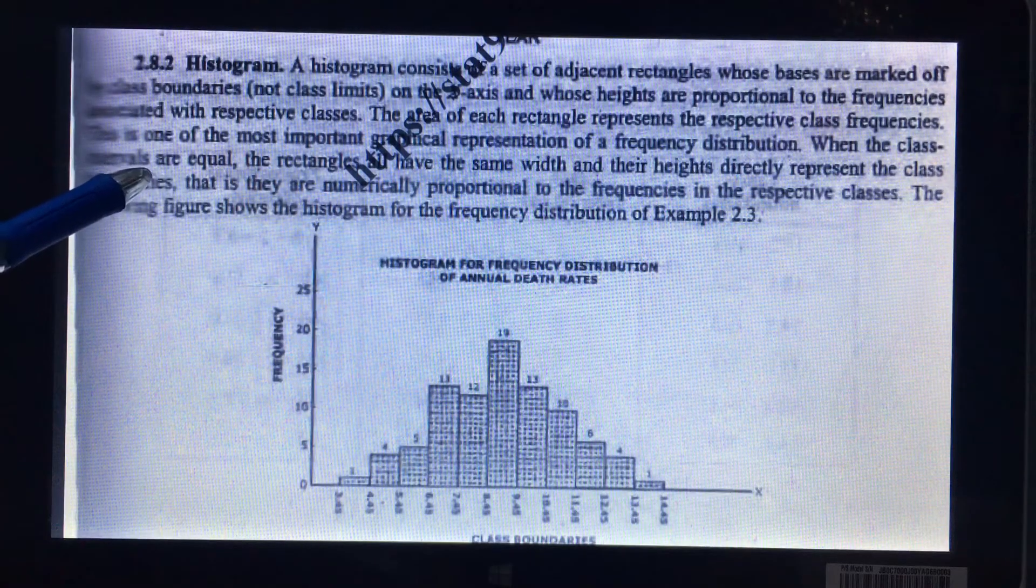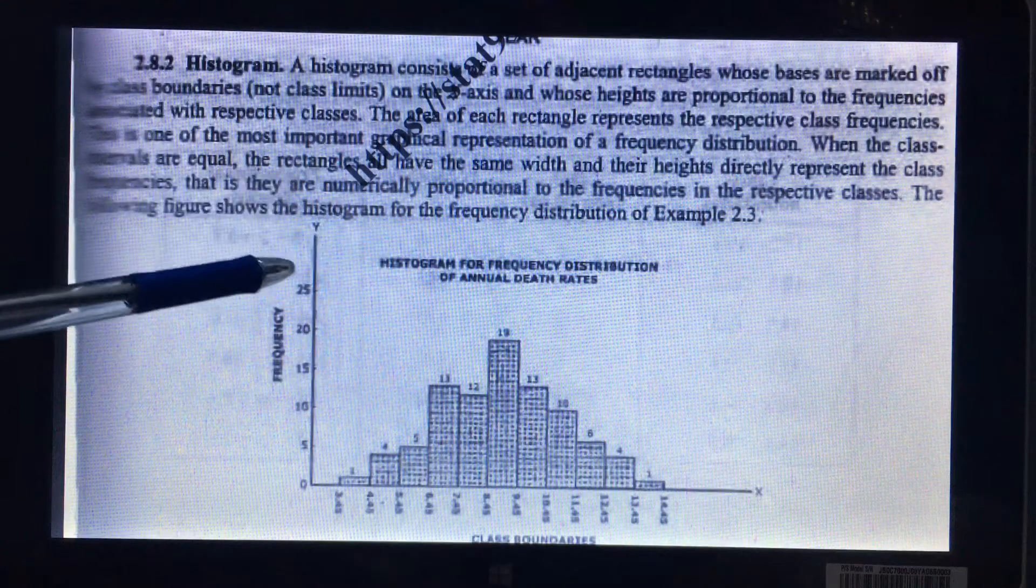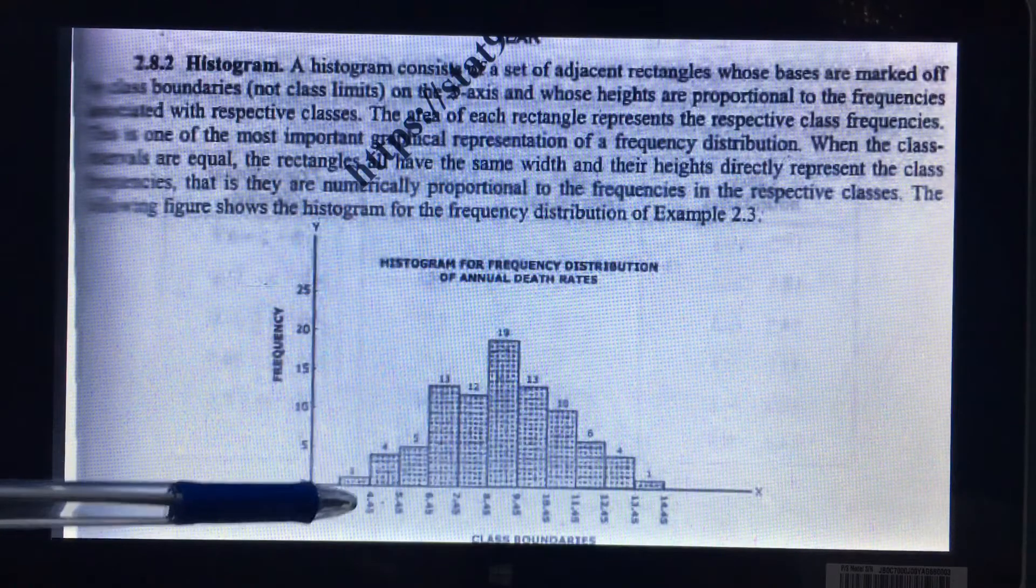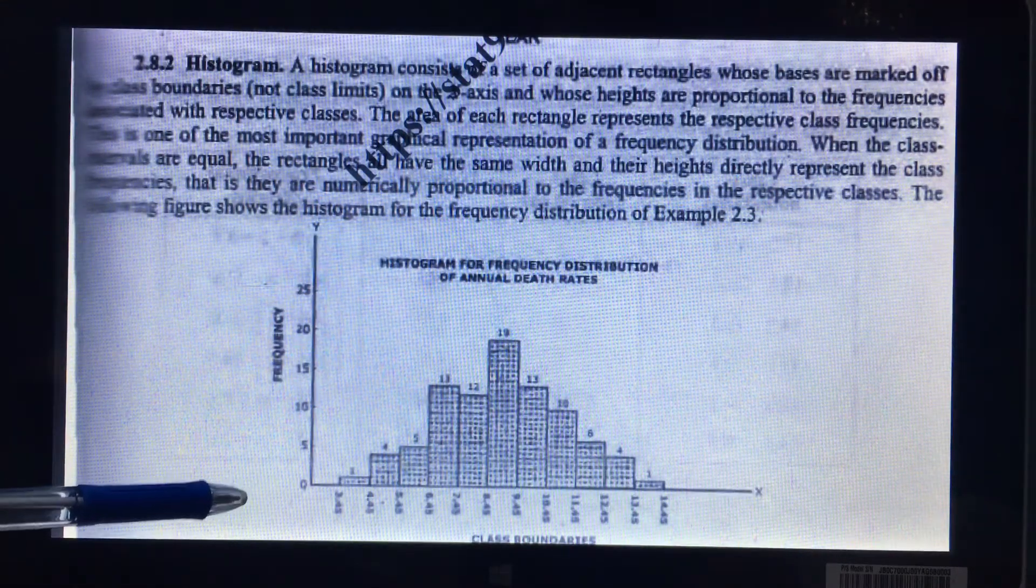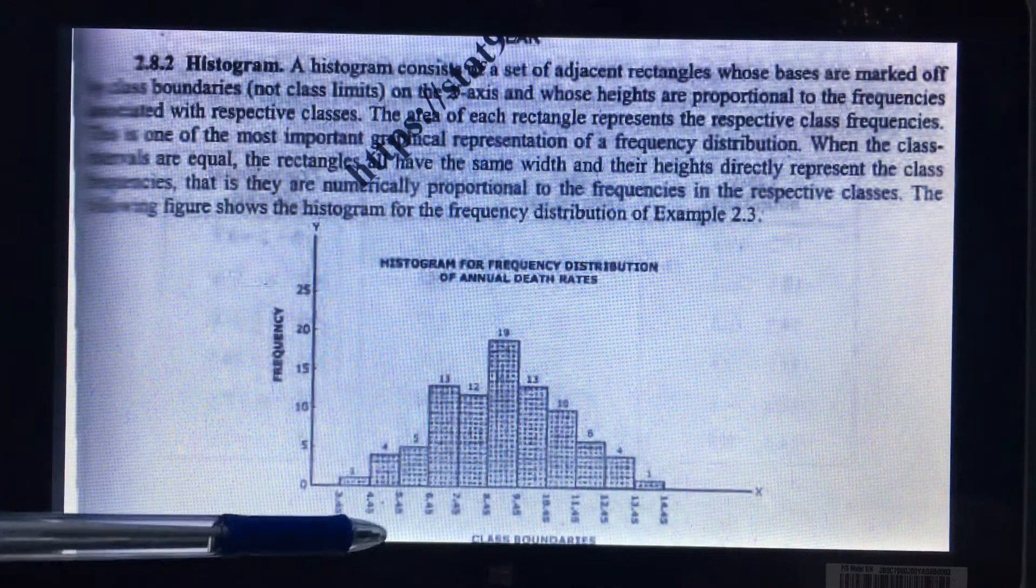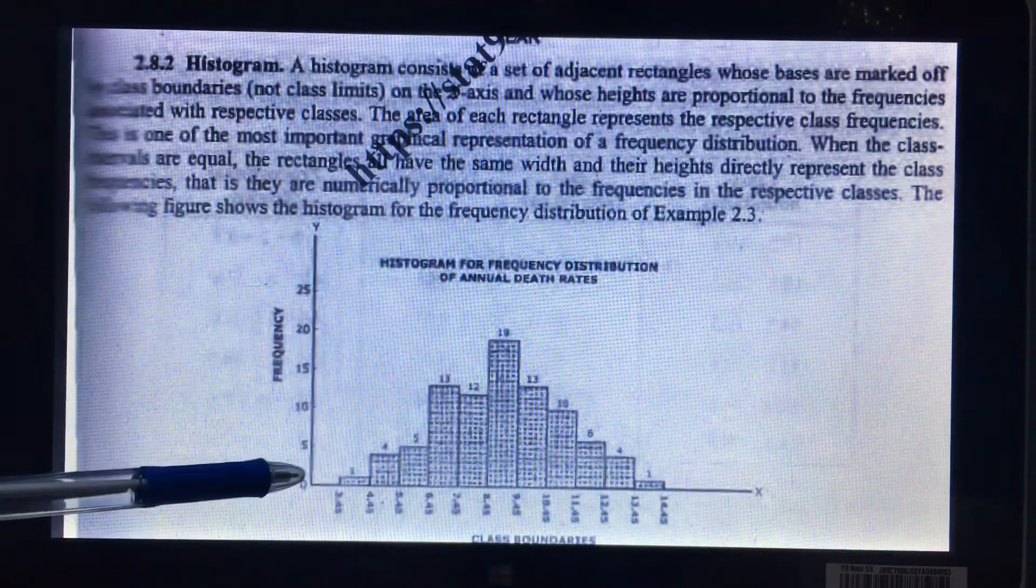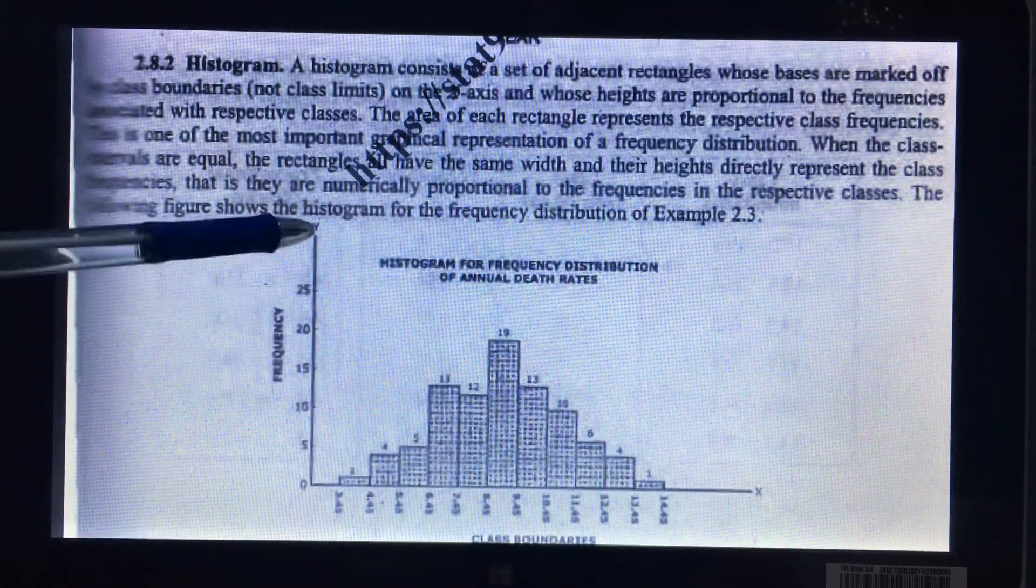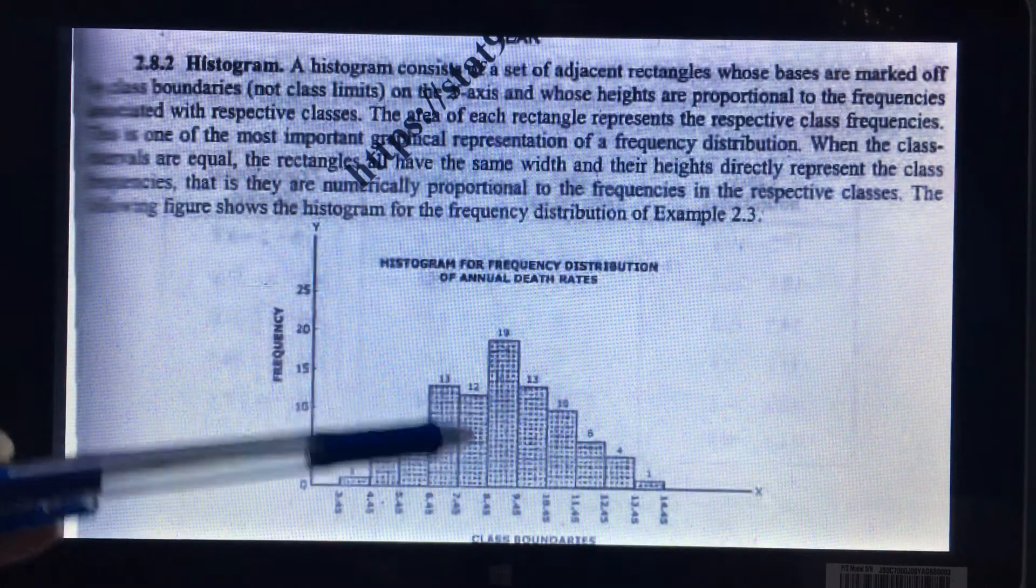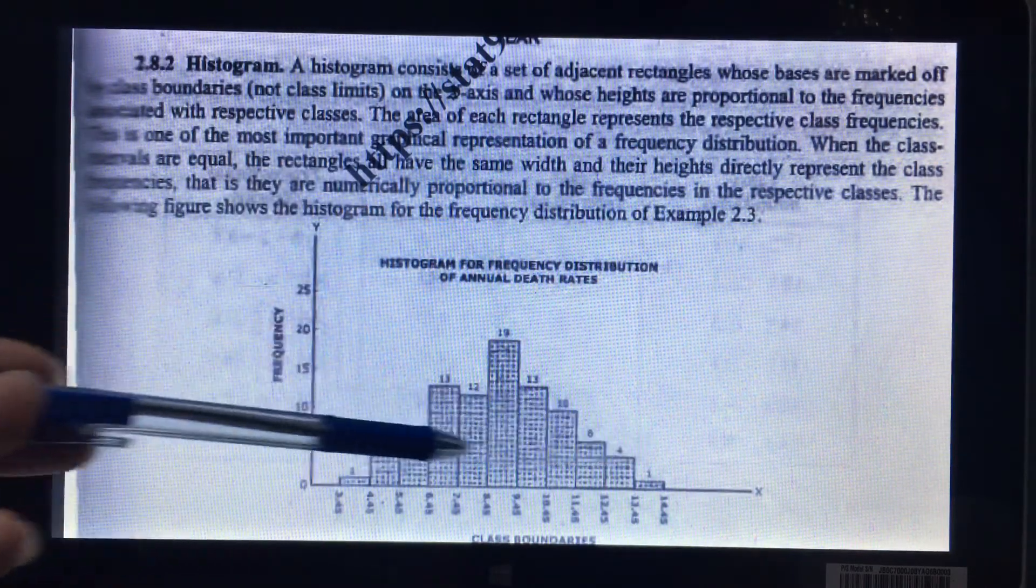It means first of all, the first step is I am going to make an x-axis and y-axis, and I am going to take the class boundaries along the x-axis. Here I am not going to take the class limits, I am only taking the class boundaries along the x-axis, and I am going to take the height of each bar that is given in our question. So these are the rectangles.